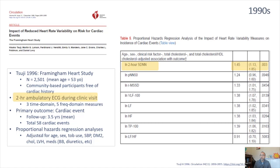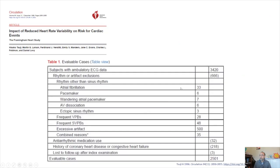Another key point from the Tsuji study concerns participant exclusions. Of up to 3,420 individuals who had ambulatory ECG data, 2,501 were ultimately included — nearly a quarter were excluded, many because they had ectopic or non-sinus rhythm beats. Researchers should expect to exclude up to a quarter of enrolled patients when evaluating heart rate variability. Most subsequent studies also excluded atrial fibrillation, which represents a significant weakness of HRV research — a large segment of the population is routinely excluded.